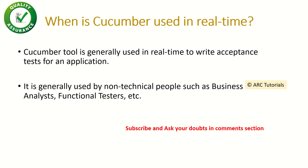When is cucumber used in real time? Cucumber is used to write the acceptance criteria of the application. It can be used to write end-to-end scripts and can also run in build pipelines, making it easily manageable. Business analysts and functional people can also test end-to-end using cucumber.